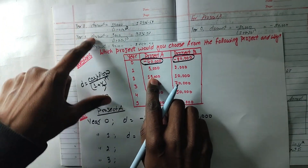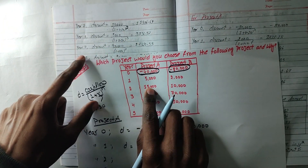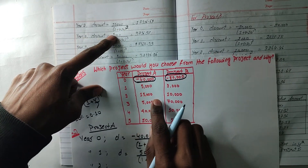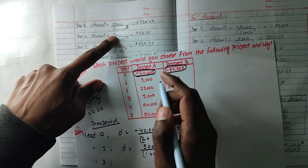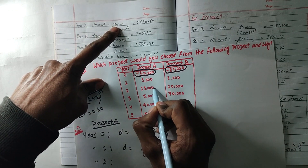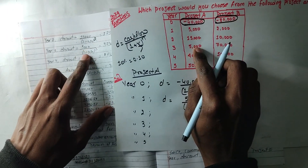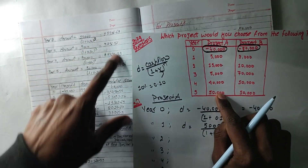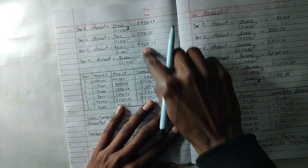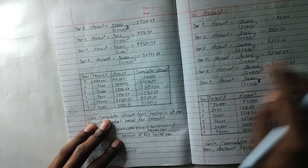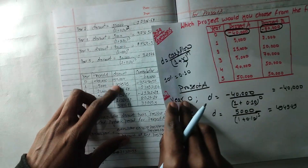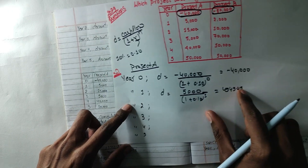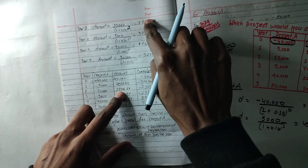We calculate approximately $2 for the first period. If you have $3, you need five hours. You still need this calculation. You need to compute the discounted values. You calculate 40,000 or minus 40,000, then 45,000 and 45,000 for this particular discount.